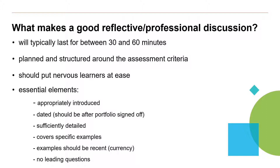What makes a good reflective professional discussion? It will typically last between 30 to 60 minutes. It should be planned and structured around the assessment criteria, and it's there to put the nerves of the learner at ease. Essential elements should be appropriately introduced, dated, sufficiently detailed, covering specific examples. Those examples should be recent, following currency within the VACs. And of course, there should be no leading questions.